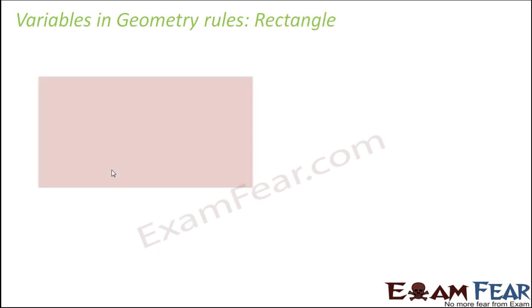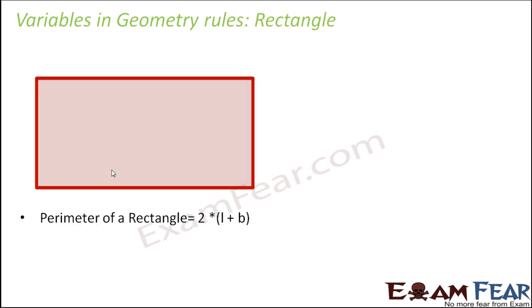Similarly, in case of rectangle also, if you try to find out the perimeter, perimeter is again sum of the four sides which is nothing but 2 into length plus breadth. So let's say that if this is the breadth,